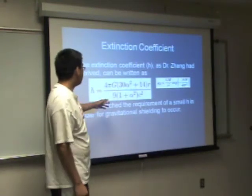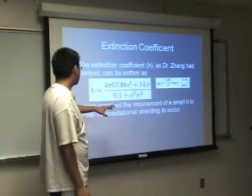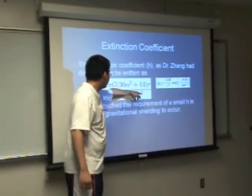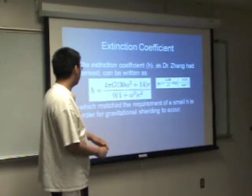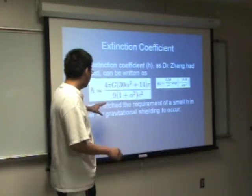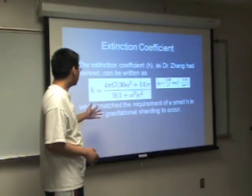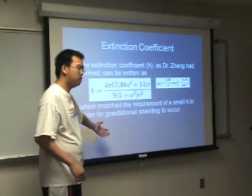And the results we got at one meter was, when the radius was at one meter, we got a very, no, when alpha is one, we got a really small extinction coefficient, which is good, because it's for the gravitational shielding.